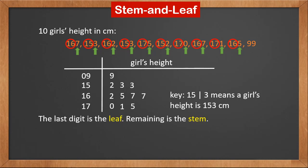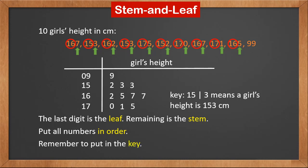So to draw a stem and leaf diagram: make the last digit the leaf and the remaining digits the stem. Put all numbers in order, and remember to put in the key.